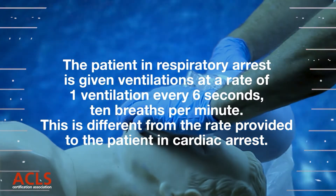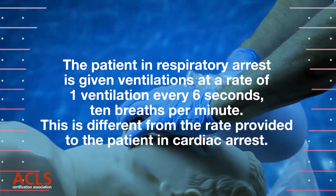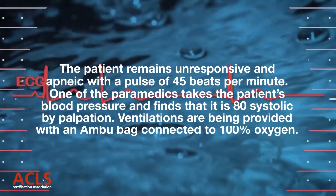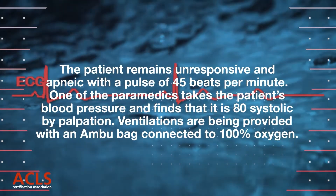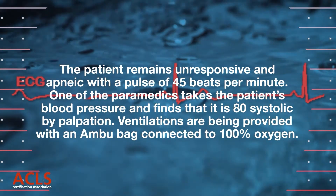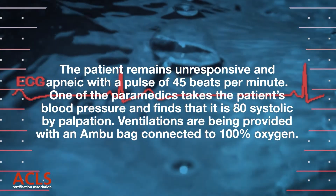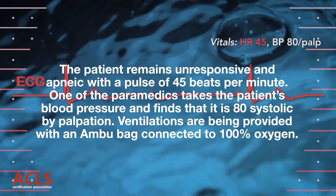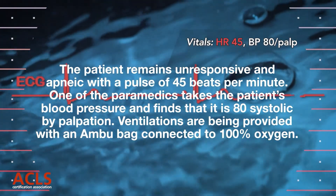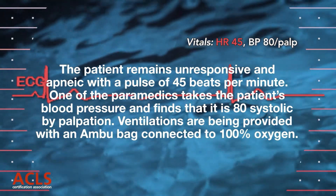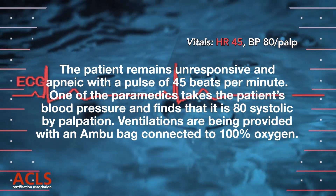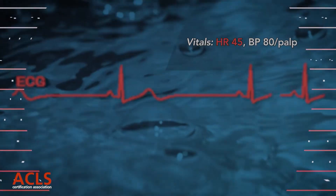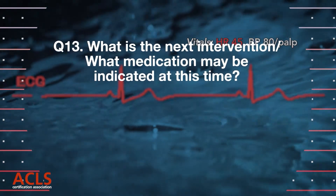This is different from the rate provided to the patient in cardiac arrest. The patient remains unresponsive and apneic with a pulse of 45 beats per minute. One of the paramedics takes the patient's blood pressure and finds that it is 80 systolic by palpation. Ventilations are being provided with an ambu bag connected to 100% oxygen. What is the next intervention?